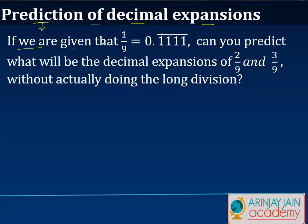For example, if we are given that 1 upon 9 is equal to 0.1111... — meaning the 1 is repeating — can you predict what will be the decimal expansion of 2 upon 9 and 3 upon 9 without actually doing the long division?